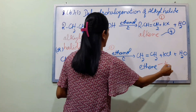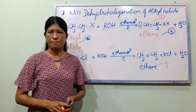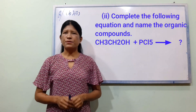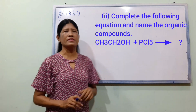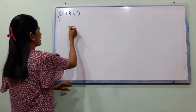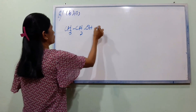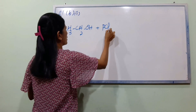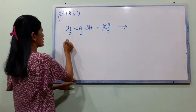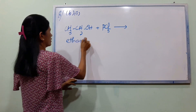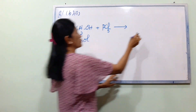We have to complete the following equation and name the organic compound. Here we have Ca3, Ca2, OH, BCL-5. Here we have the condition of blue - Ca3, Ca2, OH, and ethanol.